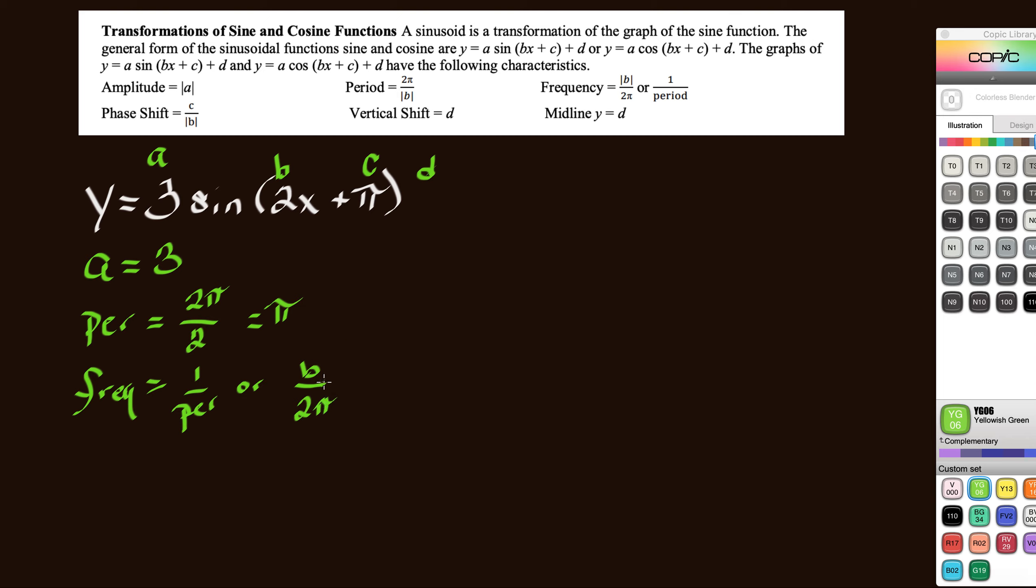Or we can write frequency as B over 2 pi. And it basically ends up being the exact same thing, right? So if our period ended up being pi, this is 1 over pi. Or we could say it's 2, which was B, over 2 pi.